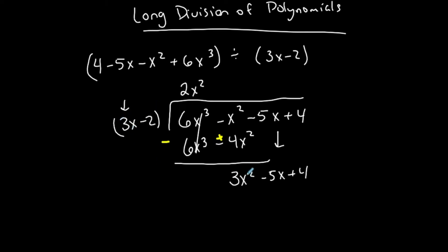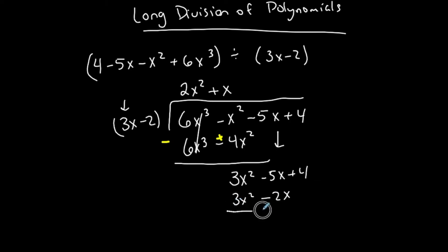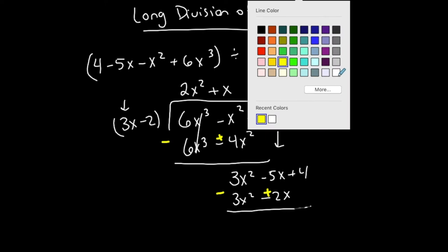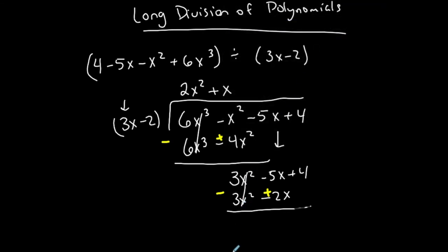I continue as long as the degree of the current term is greater than or equal to the degree of the divisor. 3x into 3x²: what times 3x gives me 3x²? Positive x. So x goes on top. x times 3x is 3x² — those match. x times negative 2 is negative 2x. I subtract again, that negative distributes: minus 3x squared, and minus negative 2x becomes plus 2x. So negative 5x plus 2x is negative 3x, plus 4.